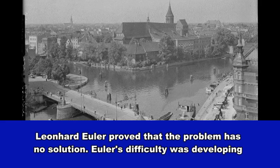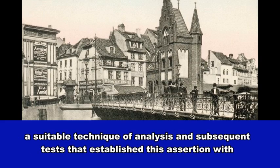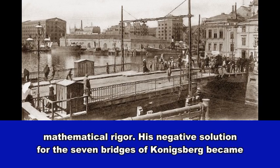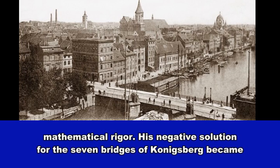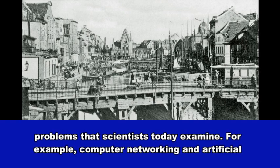Leonhard Euler proved that the problem has no solution. Euler's difficulty was developing a suitable technique of analysis and subsequent tests that established this assertion with mathematical rigor. His negative solution for the seven bridges of Koenigsberg became legendary for developing a mathematical system for understanding many of the significant problems that scientists today examine.